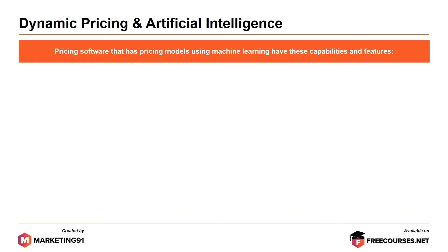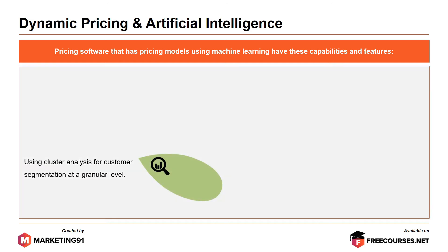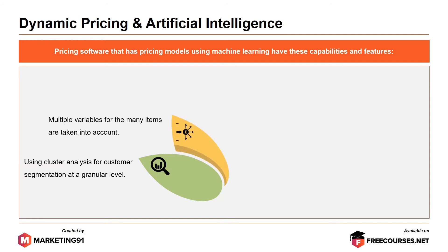Pricing software with machine learning models has these capabilities and features: first, using cluster analysis for customer segmentation at a granular level; next, multiple variables for many items are taken into account — for instance, competitor and attribute-based pricing are influencing factors that must be assessed for a price recommendation. External factors like industry trends, seasonality, weather, and location are also taken into account.